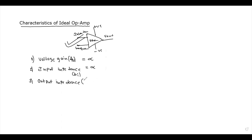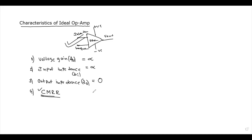Next, output impedance, which is denoted with Z suffix o. Output impedance is zero. Next, fourth one: CMRR. The full form of CMRR is common mode rejection ratio. Common mode rejection ratio is also infinity.